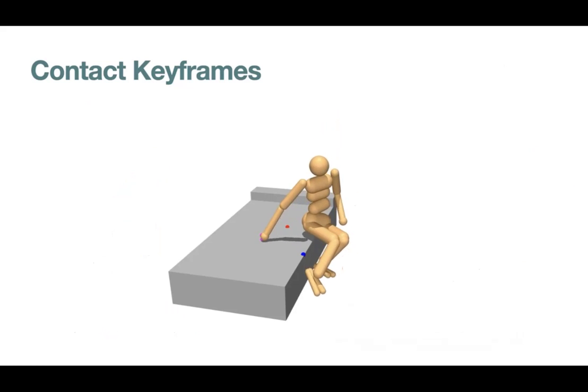We consider each keyframe to be successful only when the contact pairs are within a certain distance threshold for a specific amount of time. When a keyframe is successful, the target automatically changes to the following keyframe. Otherwise, the episode terminates at a time limit.